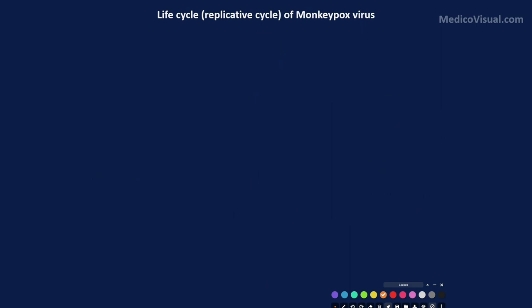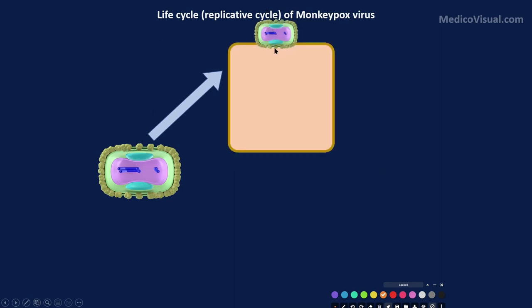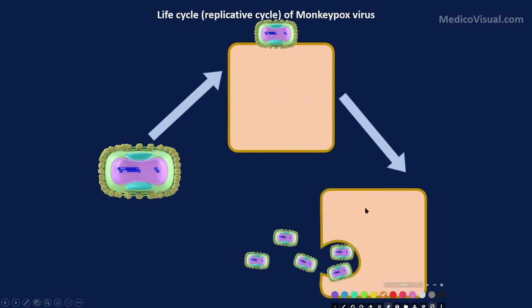If we come to viruses, let's suppose here is the monkeypox virus. This virus infects a cell — first it attaches to the cell and enters inside. After entering, it replicates and ultimately makes copies. These copies are released, and one copy will then again infect a new cell, even in another host. That is how the generations of viruses continue to proceed.